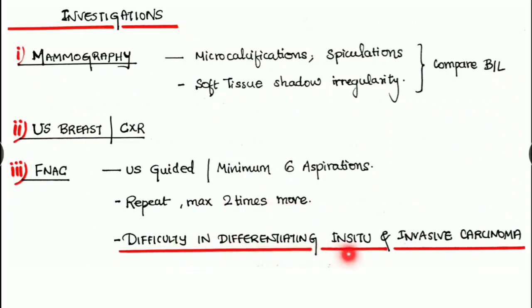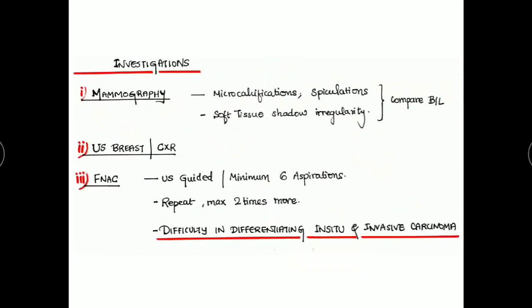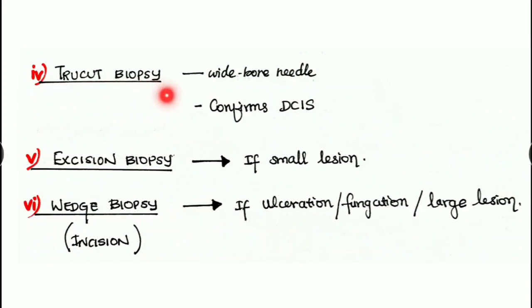In FNAC there is difficulty in differentiating the in situ and the invasive carcinoma, but in case of true cut biopsy we are using wide bore needle and it helps in confirmation of the ductal carcinoma in situ. Next is excision biopsy - excision is done if the lesion is very small. There is wedge biopsy or incisional biopsy - it is done if there is any ulceration, fungation, or even if the lesion is very large.